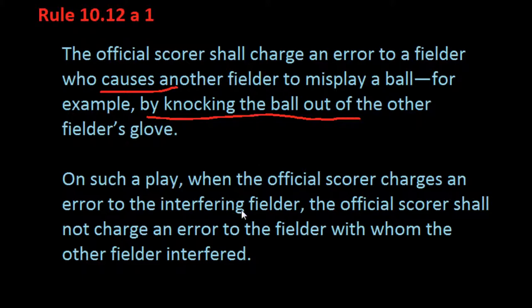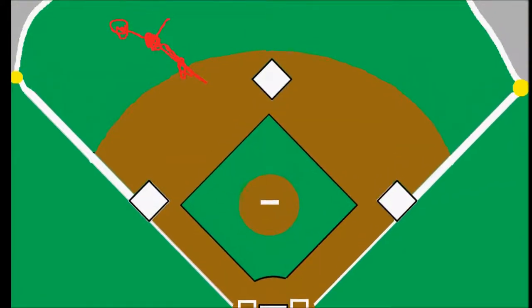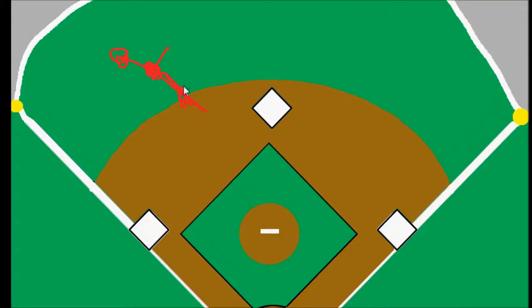So it clarifies then in the second portion that there aren't two errors charged on the play. It's not both of them who get the error. Only one error would be given out on the play, and that it would be to the collider.